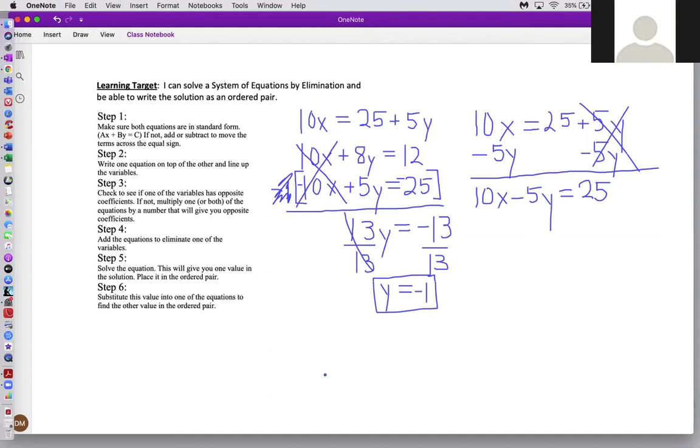Notice that the step I just did was step five, solve the equation. This will give you one value in the solution. So I'm going to put it in the ordered pair. It's the y value, so it comes second after the comma before the end parentheses. So if you said the next step is step six, which is substitute this value into one of the equations to find the other value in the ordered pair, you're absolutely correct. So I'm going to go back to the first equation. It doesn't matter which one I pick to begin with, because I'm going to check my answer with the other equation.